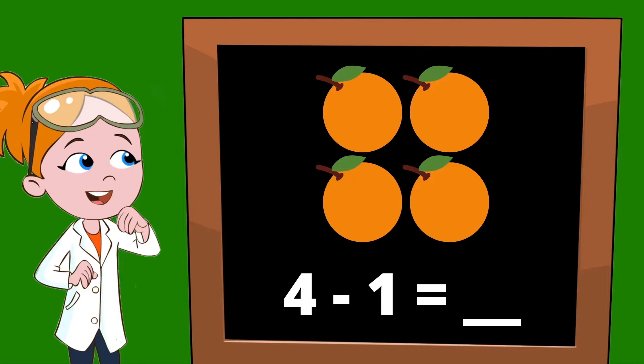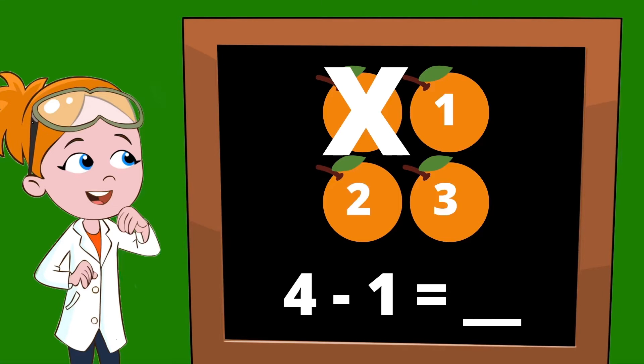Next, our equation says that we need to subtract 1 orange. Well, if we're going to take away 1 orange, let's draw a big giant X through 1 orange. There we go. Now, our answer would be the number of oranges that are left. Let's count: 1, 2, 3. We have 3 oranges left, so our answer is 3.